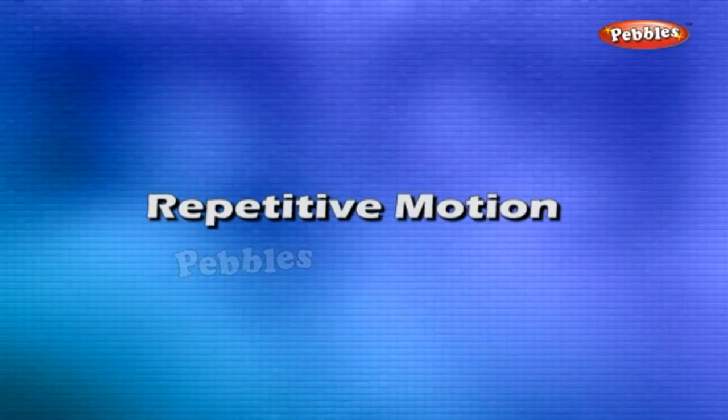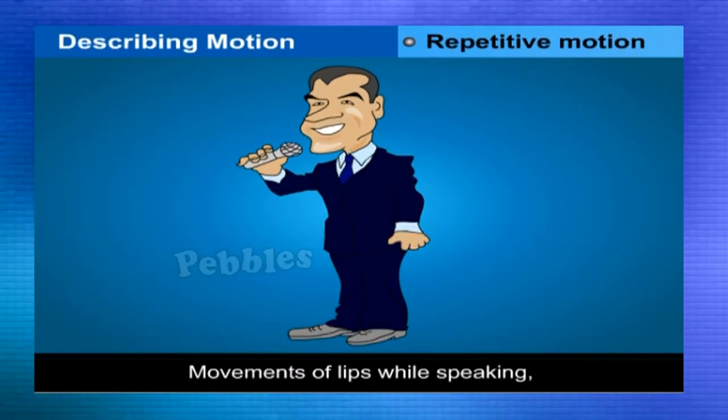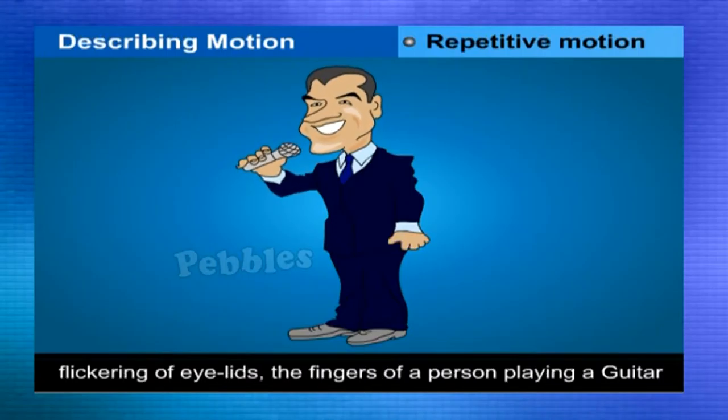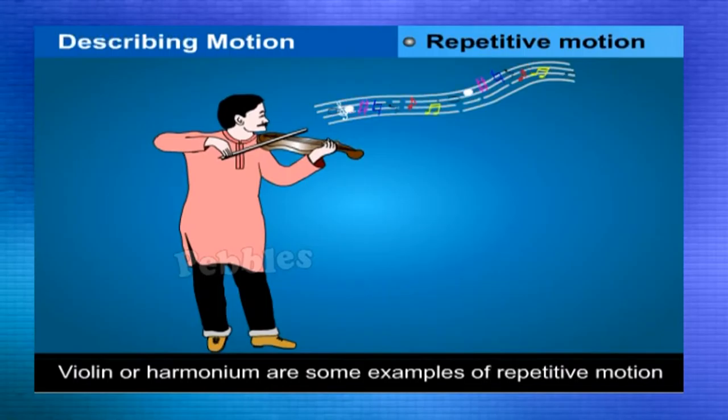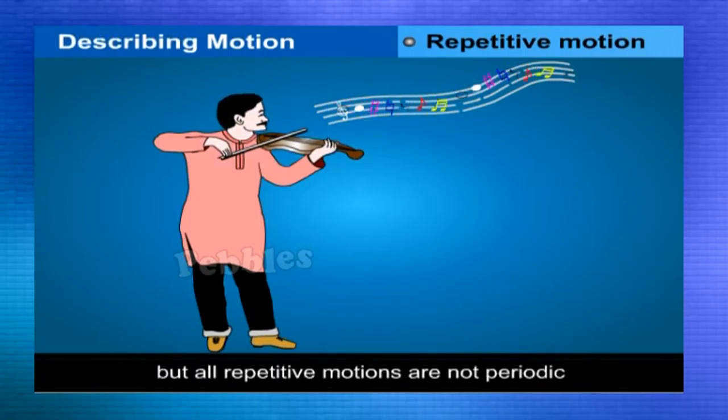Repetitive motion. Movement of lips while speaking, flickering of eyelids, the fingers of a person playing a guitar, violin or harmonium are some examples of repetitive motion. All periodic motions are repetitive, but all repetitive motions are not periodic.